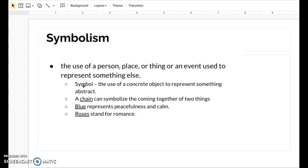Up here we have a couple examples. Blue sometimes represents peacefulness or calm, but then at the same time you can be blue and be sad. So it depends on how they use the color. Roses are often for romances.